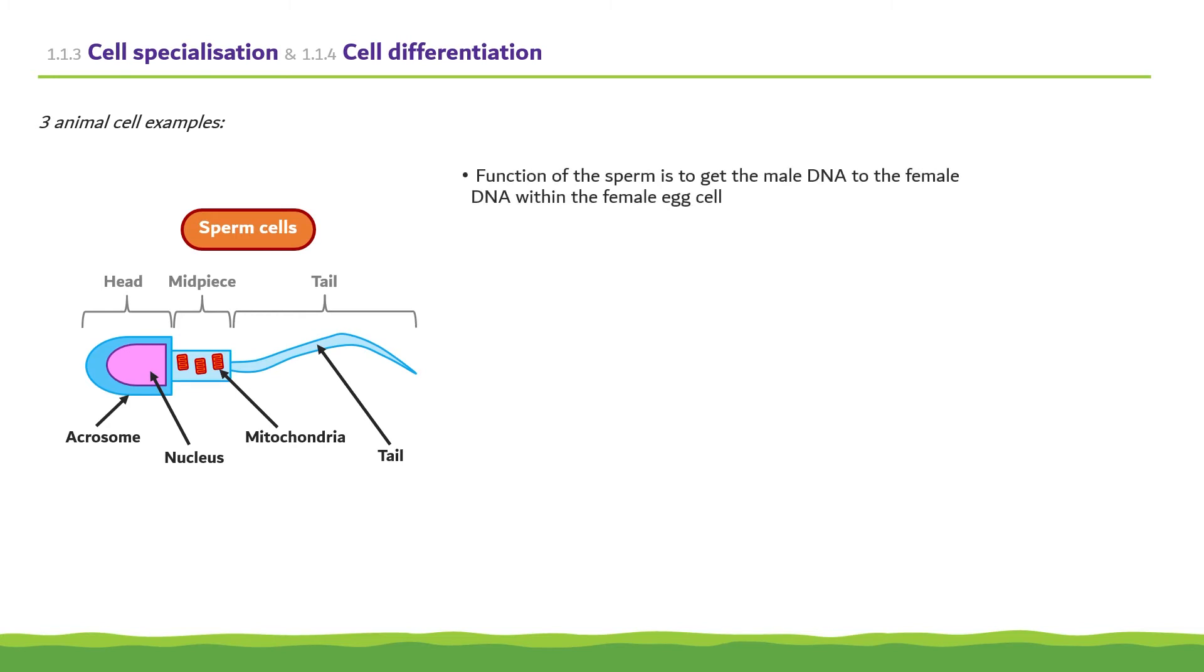Knowledge of three examples for both specialized animal cells and specialized plant cells are required for the exam. Sperm cells are specialized animal cells. Their function is to get the male DNA to the female DNA, contained within the female egg.